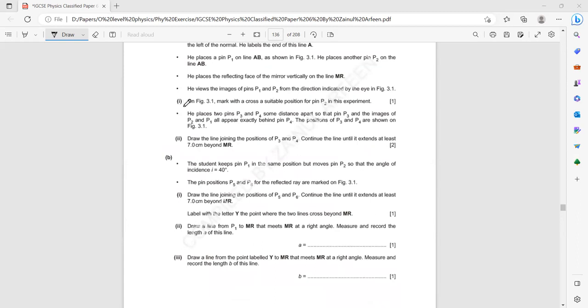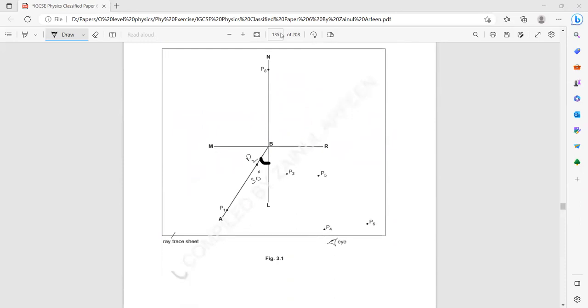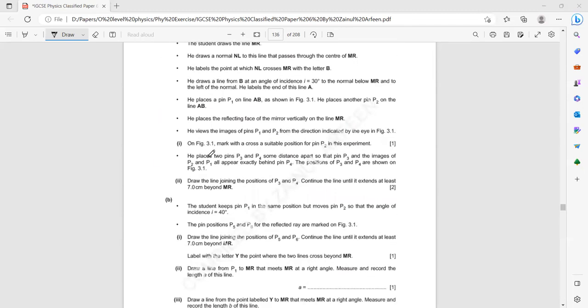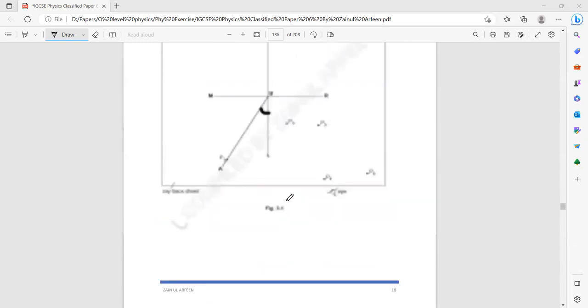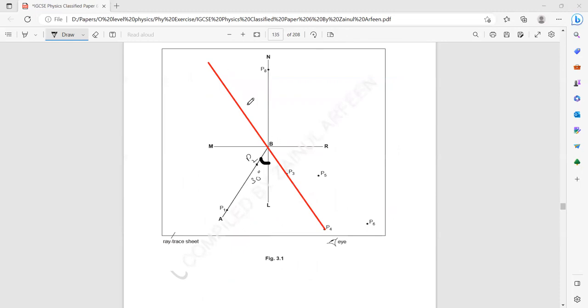Then he places two pins P3 and P4 at some distance so that the image of P1 and P2 appear in line. Draw a line joining P3 and P4 and continue until it extends about 7 cm beyond MR. So we have to draw a line joining P3 and P4 and we have to continue until it is beyond MR. So we continue in 7 cm dimension here. After MR, it should be 7 cm. So we draw and after MR, we just extend 7 cm.